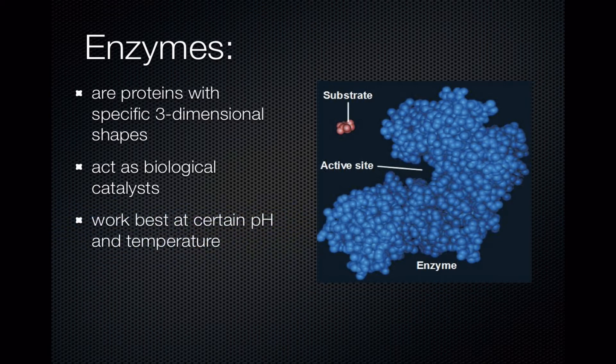All enzymes work best at a certain pH and a certain temperature. All proteins are sensitive to large changes in pH or temperature. If you heat up an enzyme — cook it, so to speak — you change its three-dimensional shape and it's probably not going to work anymore because the active site has been altered. Same thing with pH: if you put proteins in a powerful acid you change the shape of the protein, altering the active site and rendering it useless as a biological catalyst.